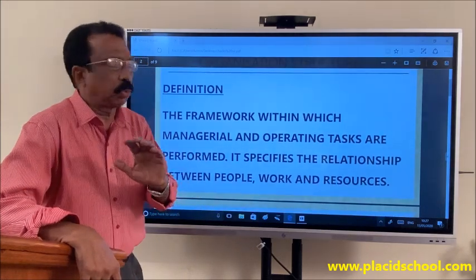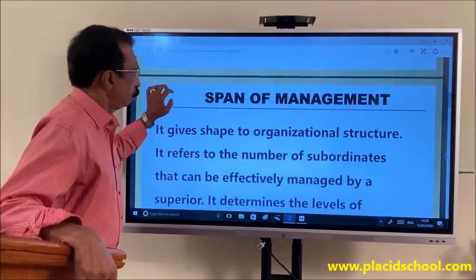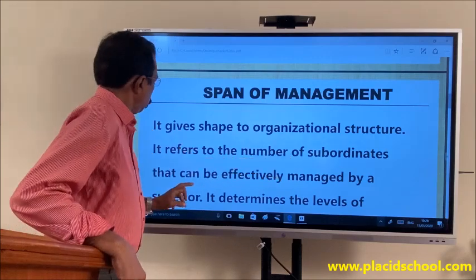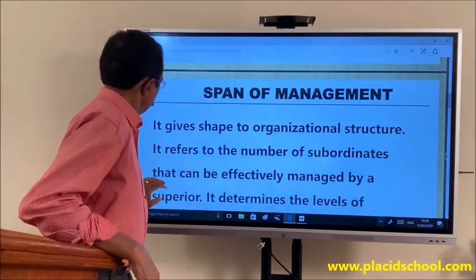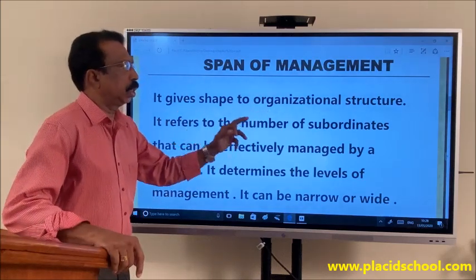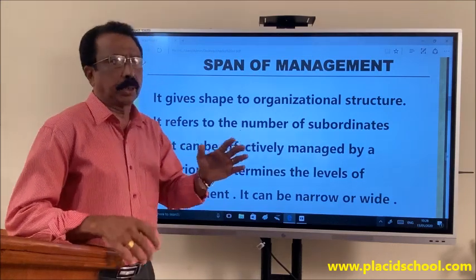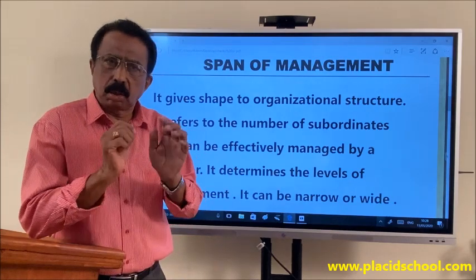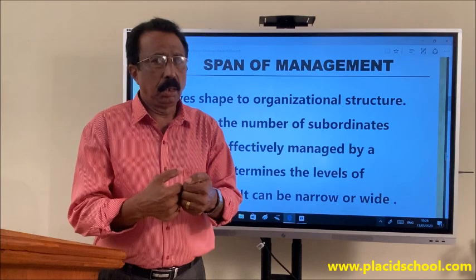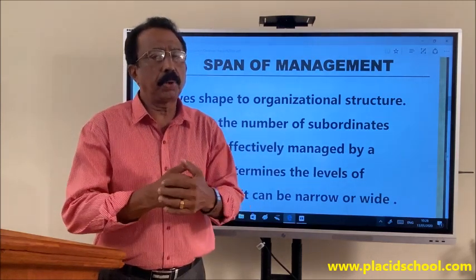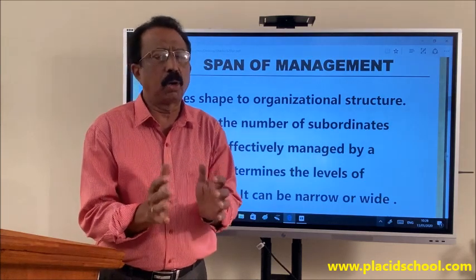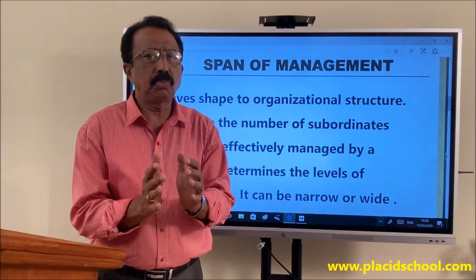Now we are going to see the span of management. Span of management gives shape to the organizational structure. It refers to the number of subordinates that can be effectively managed by a superior, and it determines the levels of management. It can be narrow or wide. In other words, span of management means how many subordinates a manager can supervise at a time effectively. If there are so many people and they are not qualified and experienced, one person will find it difficult, so we have to find out the correct number of subordinates a manager can supervise.